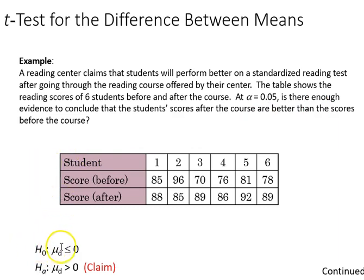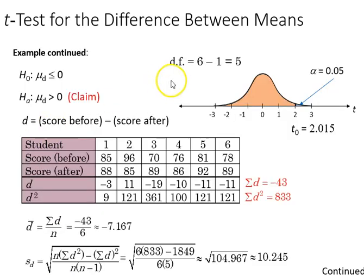Stated mathematically, our null is that the difference is less than or equal to zero. An alternative is that it's greater than zero, the difference. This shows our degrees of freedom, six minus one, which is five at alpha 0.05 level. If we look that up on our t distribution, we get 2.015 for our cutoff.